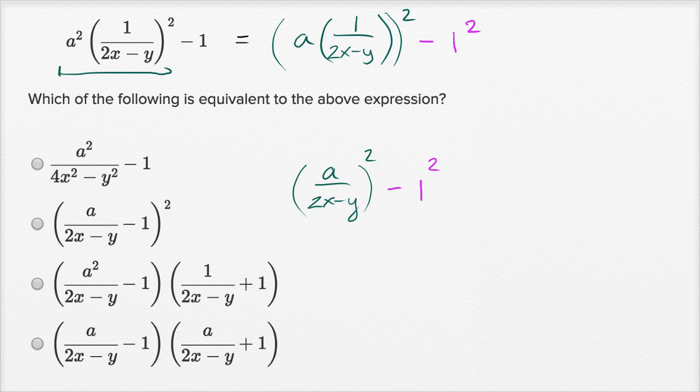And so let's factor this out. This is going to be the product of two expressions. And this is, once again, if I have something squared minus something else squared, it's going to be a over two x minus y, plus this thing squared, plus one.